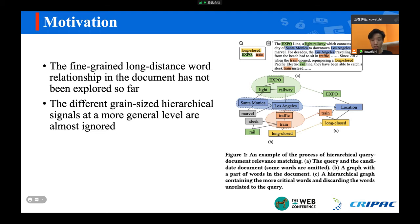Secondly, the different grain-sized hierarchical signals at a more general level are almost ignored. The hierarchy mainly refers to two aspects. One is that the words unrelated to the query are dropped, such as marvel and sleek. Another is that the words which may have similar effects for matching the query are integrated to a more general node. For example, Santa Monica and Los Angeles are integrated to a more general node named Location.